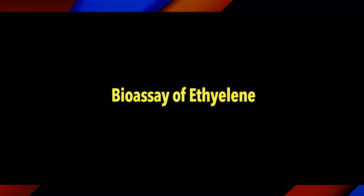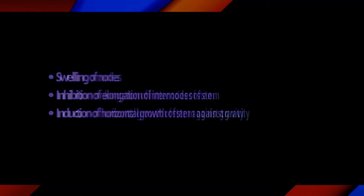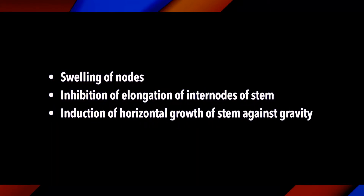Now, the bioassay of ethylene. It is done on the principle of the triple response, which includes three characteristic effects of ethylene on etiolated seedlings of pea. These include: swelling of nodes, inhibition of elongation of internodes of stem, and induction of horizontal growth of stem against gravity.